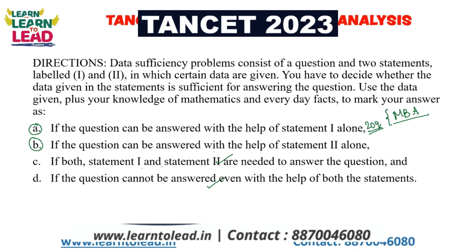Option A is statement 1 alone. Option B is statement 2 alone. Option C is statement 1 and 2 both. Option D is neither nor. So before starting with part 4, data sufficiency — and also for MCA students, you can also expect some questions based on data sufficiency. The answer to data sufficiency is checked with your options.